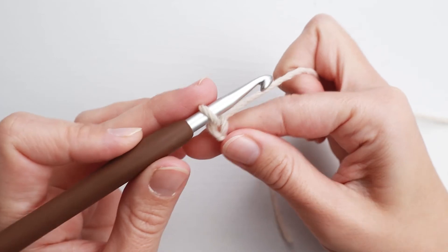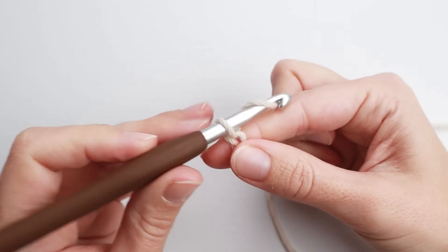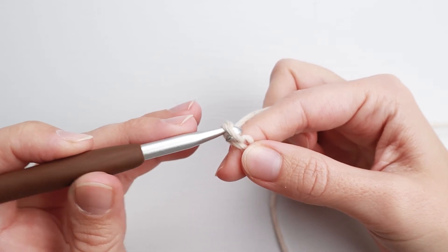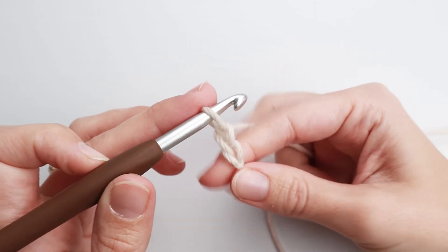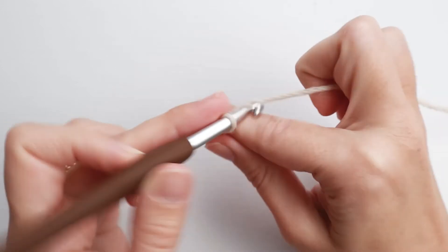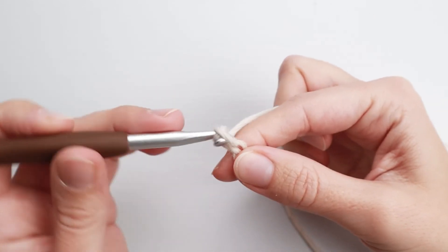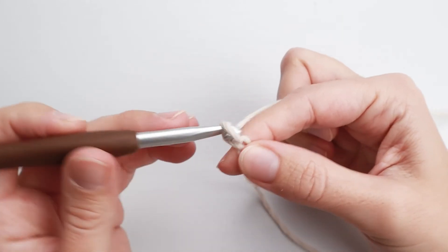I'm gonna do another. I yarn over, I'm gonna pull the yarn and the hook out of the loop, and that was my second chain stitch. I'm just gonna continue to do that as many as the pattern says to.